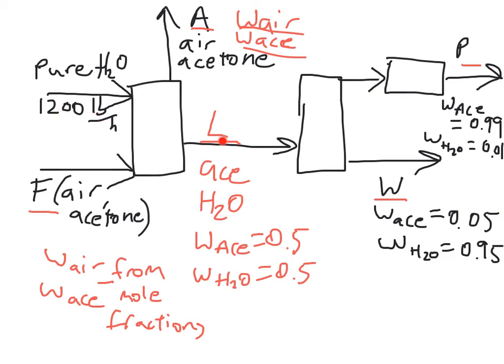So once we know L, we've eliminated that variable. And at that point, we can go ahead and do some material balance equations around this system right here, because at that point we would only have two unknown variables. W and P would be our two unknown variables, and since we have two components, acetone and water, we can solve for P and W once we know L, which we found from the water stream.